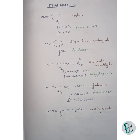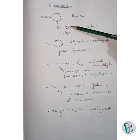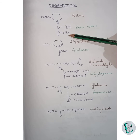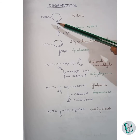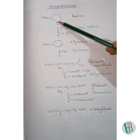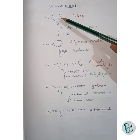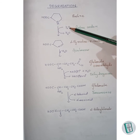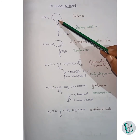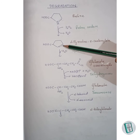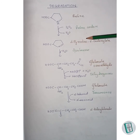Now let us move on to the degradation of proline. The first step of proline degradation is that proline, in the presence of proline oxidase, gets converted to delta-prime pyrroline-5-carboxylate. Here, an oxygen atom comes in and, by accepting hydrogen, is released as a water molecule. One hydrogen from the nitrogen and another from the adjacent CH₂ leave along with the oxygen atom as a water molecule, resulting in a double bond forming between the nitrogen and carbon. Thus delta-prime pyrroline-5-carboxylate is formed.